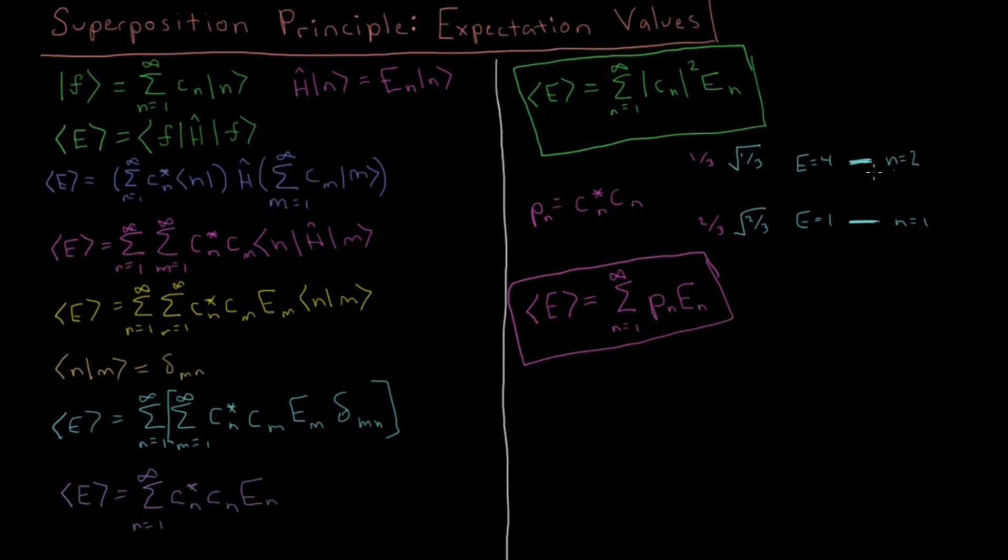And then our expectation value, if you did the weighted average of those, the expectation value would be, sorry I put the 2 thirds down here, so it's actually going to be down there. The expectation value is going to be 2. If you do 1 third times 4 plus 2 thirds times 1, you'll get that the expectation value is 2.